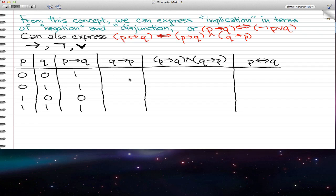Now if you flip these around so that q implies p, then we'll have 0 implies 0 that's 1, 1 implies 0 that's just 0, 0 implies 1 is 1, and 1 implies 1 is also 1.